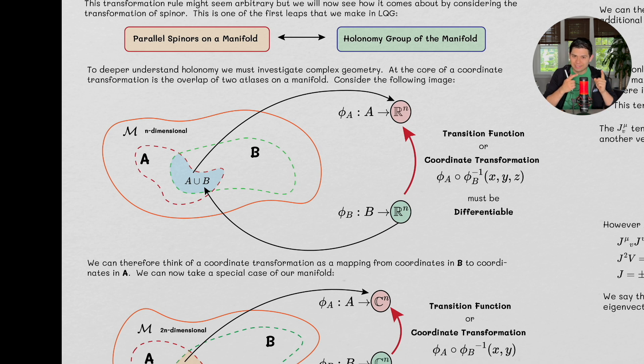So, the overlap is the name of the game, the overlap is the connection between the two atlases, and we can already start thinking here, okay, the connection, connection coefficients in GR, we're going to get there. But this is the point.